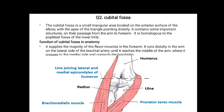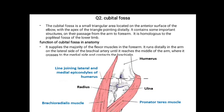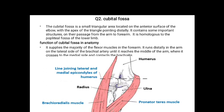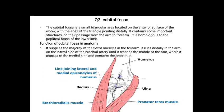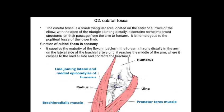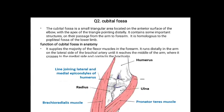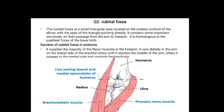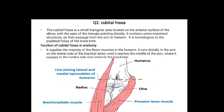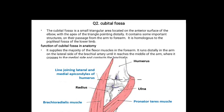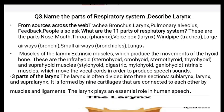Functions of the cubital fossa: it supplies the majority of flexor muscles in the forearm. The brachial artery runs distally in the arm on the lateral side until it reaches the middle of the arm, where it crosses to the medial side and contacts the brachial region. A diagram is provided.